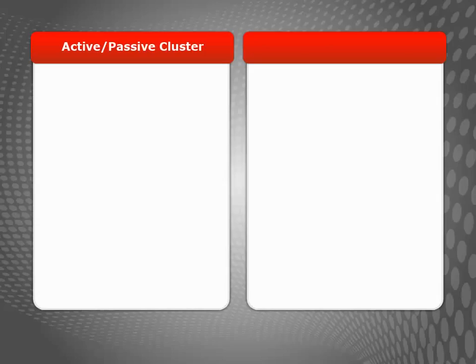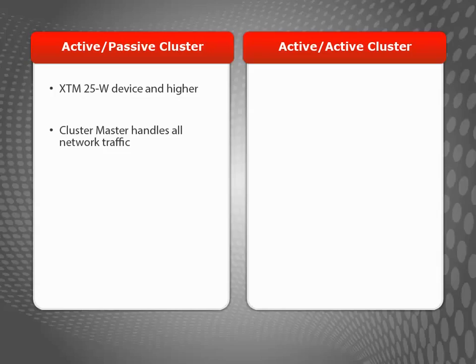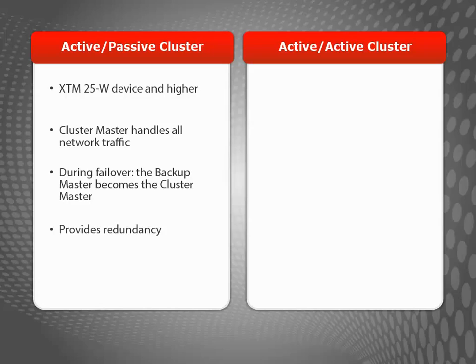When building a FireCluster, you have two configuration options: you can configure an active-passive FireCluster or an active-active FireCluster. In an active-passive FireCluster, the active device handles all of the network traffic. If it fails over, the passive device takes over the connections assigned to the failed device. Because the traffic load is handled by only one device at a time, an active-passive cluster provides redundancy but not increased scalability.